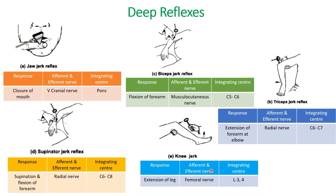The last deep reflex is the knee jerk. With a reflex hammer, we'll strike the patellar tendon. The response is extension of the leg.